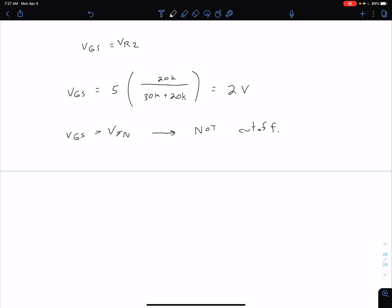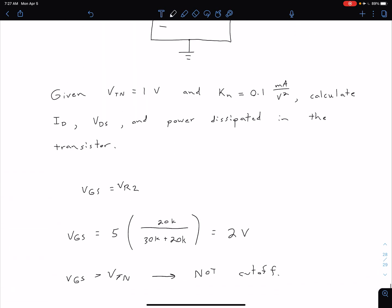Another thing that we can note, even before we calculated that VGS, is the fact that we have an NMOS transistor with a positive VTN. That's telling us that we have an enhancement mode device. In other words, it's normally off, and we're going to have to apply some gate voltage greater than 1 volt in order to turn this on.